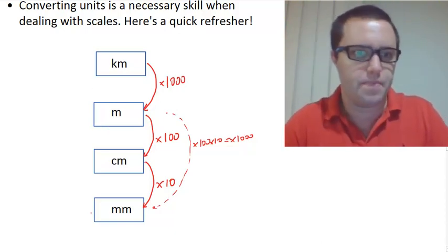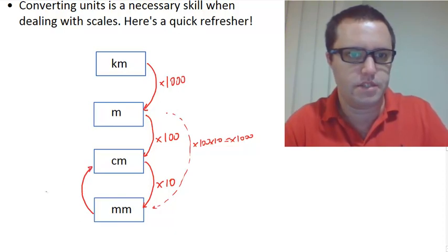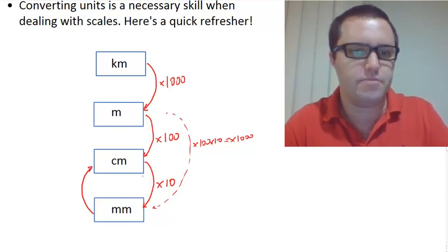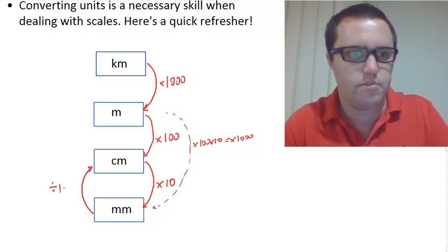To go the other way, from millimeters to centimeters, we need to divide by 10. To go from centimeters to meters, we need to divide by 100, because there's 100 centimeters in a meter.